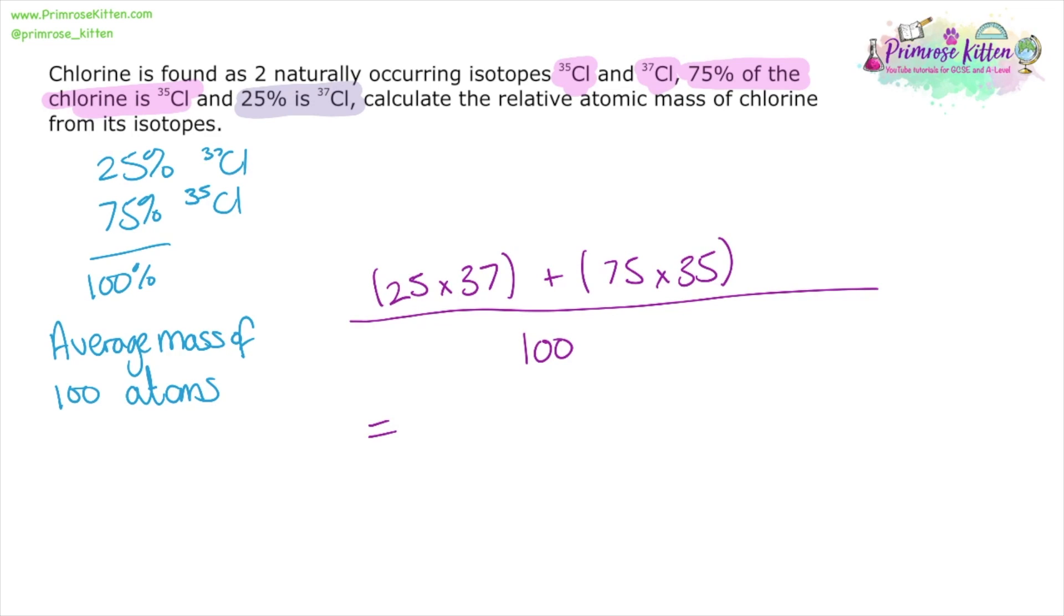We could add all of these together and divide them by the number of atoms, divide them by 100, giving us 35.5 as the average mass.